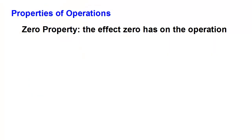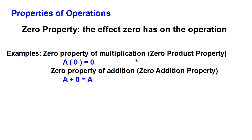Let's start by looking at zero. The zero property of any operation is the effect that zero has on the operation. It may seem like a simple idea, but it actually turns out to be pretty important. The zero property of multiplication, also known as the zero product property, has to do with what happens when we take a number A and multiply it by zero. The result is always zero.